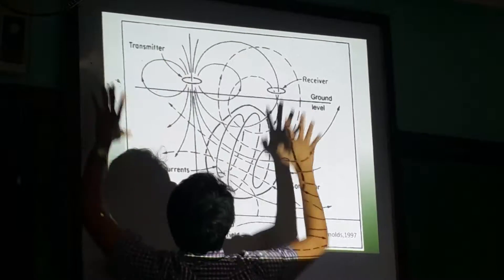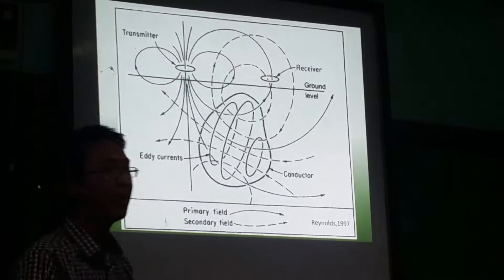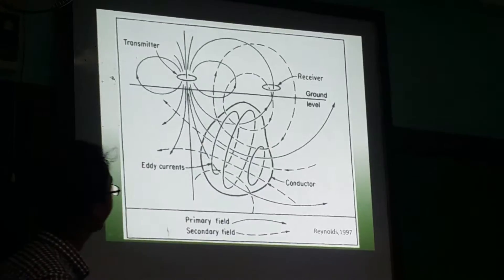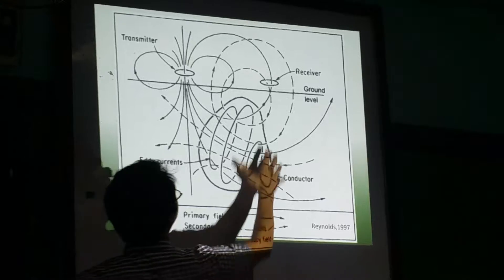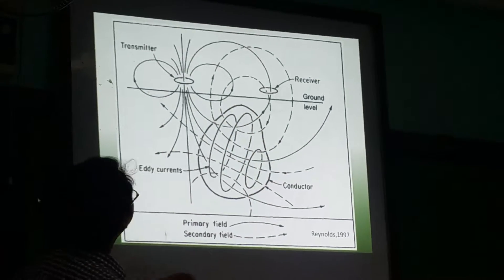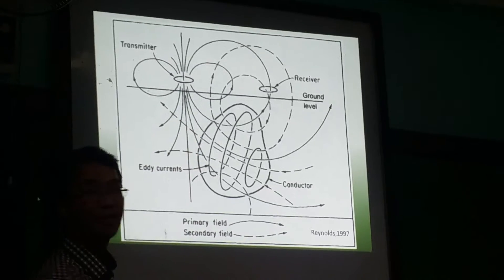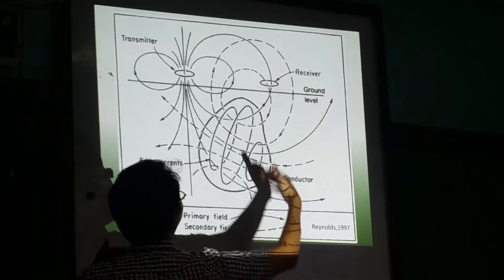This is your transmitter, and then you have a conductor here. With the presence of your primary field, it produces at any time.